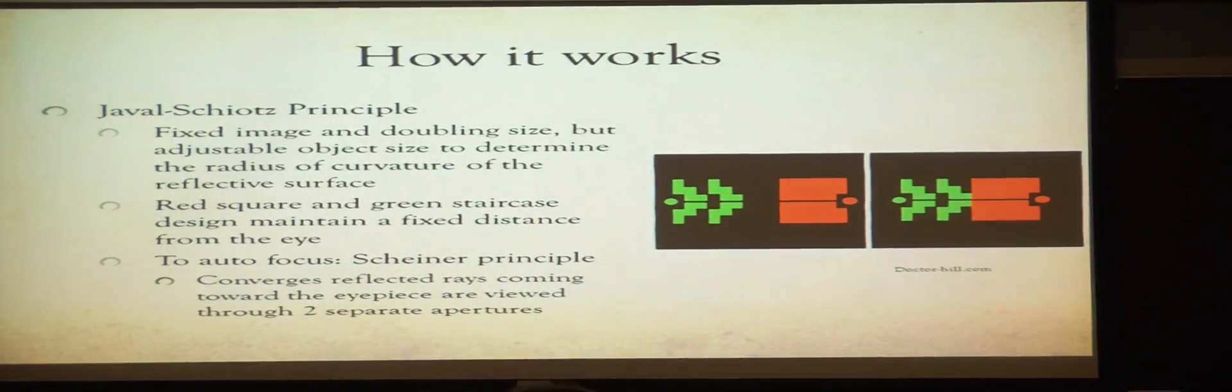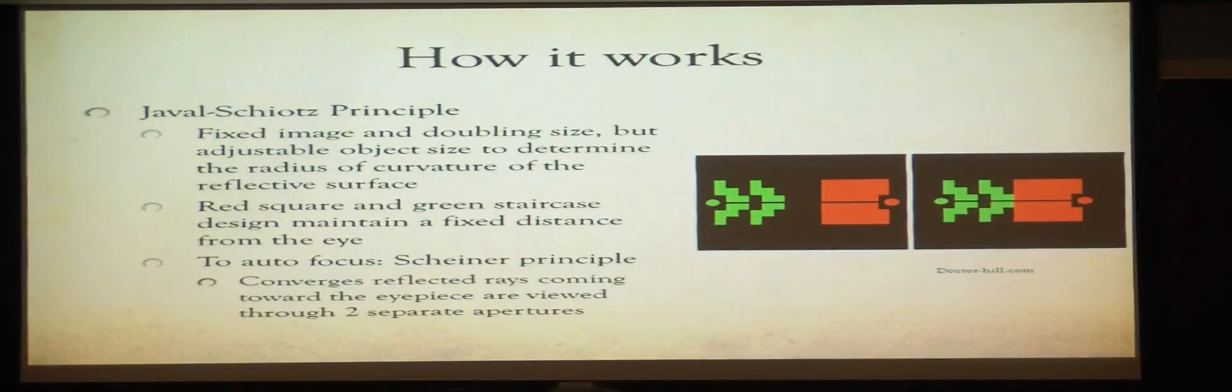The keratometer has two different types. The first one being the Javal-Schiotz principle, where there's a fixed image of fixed doubling size, and the object size is adjustable to determine the radius of curvature of the reflective surface. It will use a red square and green staircase to maintain a fixed distance from the eye, and it applies the Scheiner principle which is used to auto-focus the image, and this converges to reflect the radius into one focal point so that you can see it through the eyepiece.